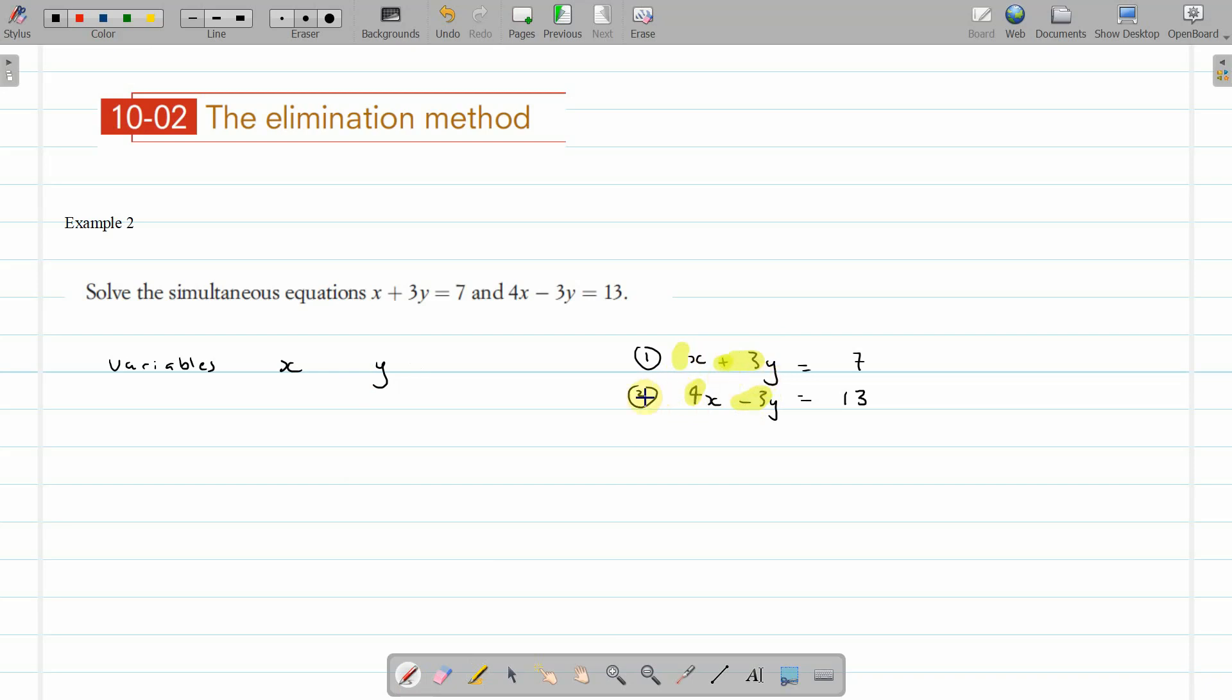Now what we're going to do this time, because we've got variables that are all different to each other, we look at ones that are closely related, and we can see that for y, we've got opposite ones. We've got a plus 3 and a minus 3. Now in this case, we can use that to eliminate the y variable, because what we can do is when we get the coefficients are opposite, we add them.